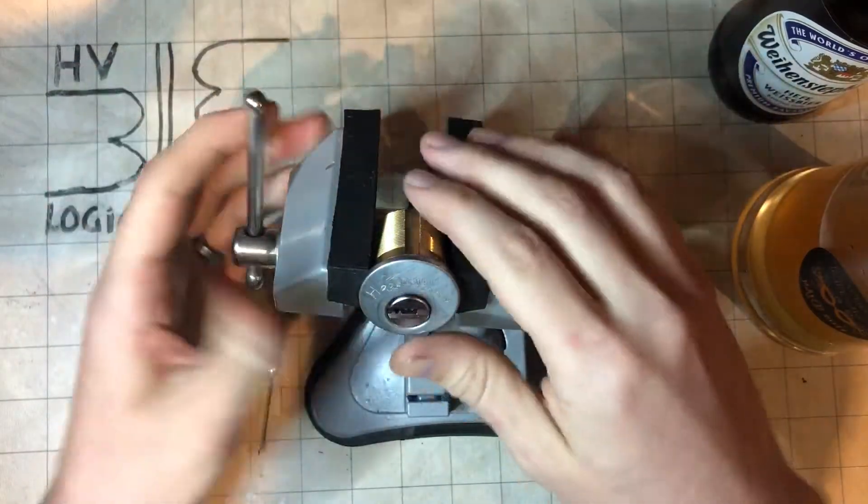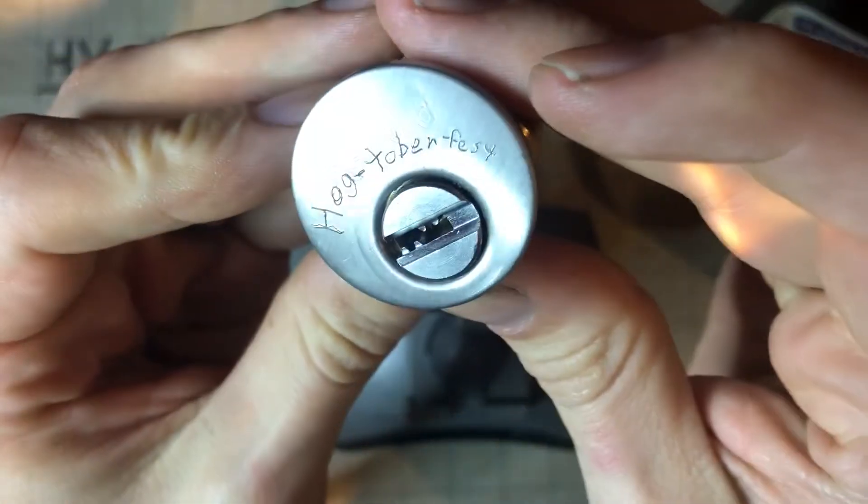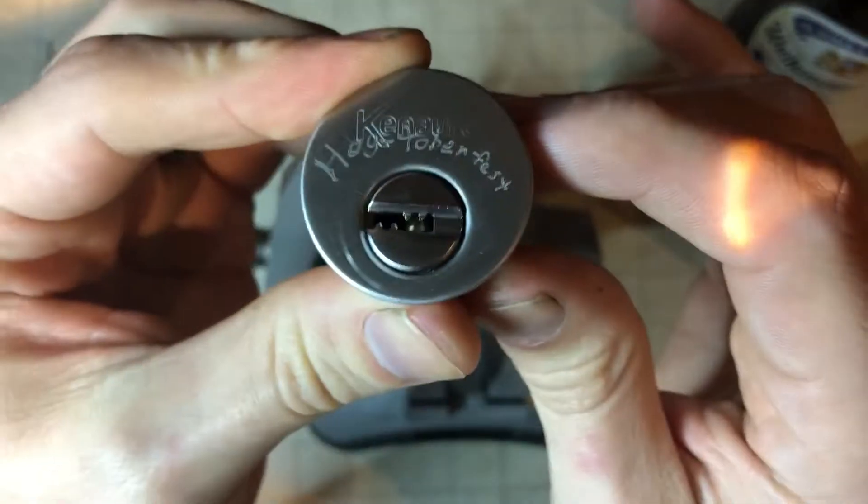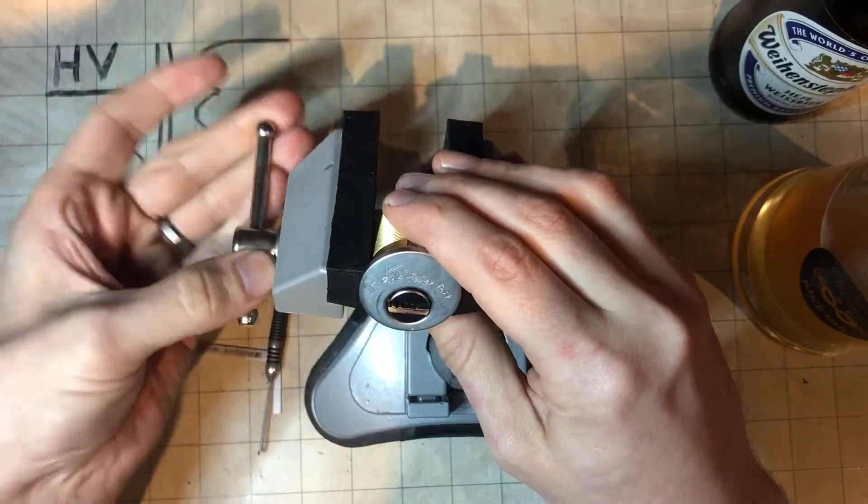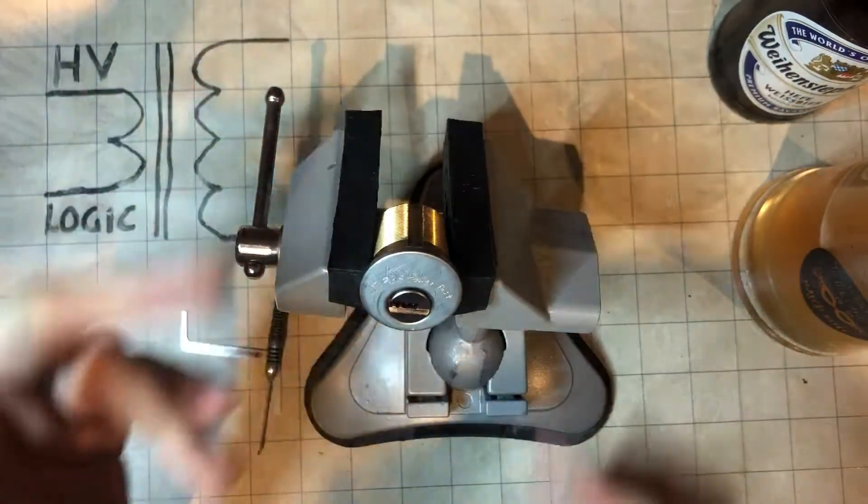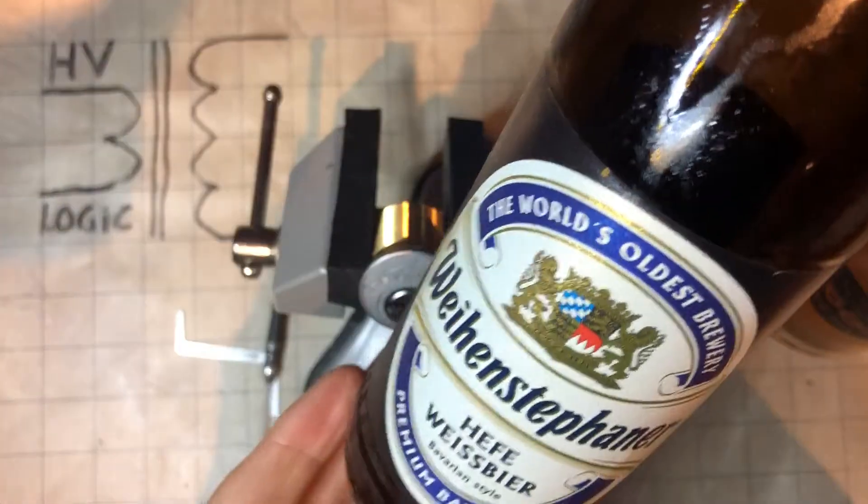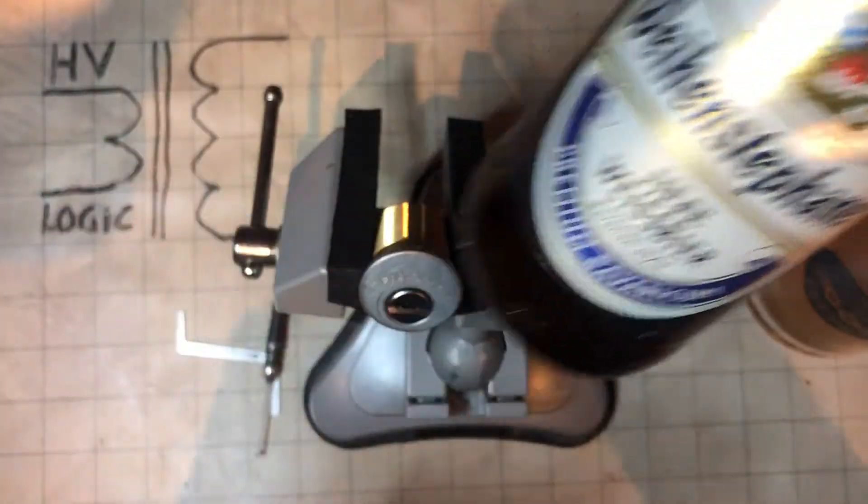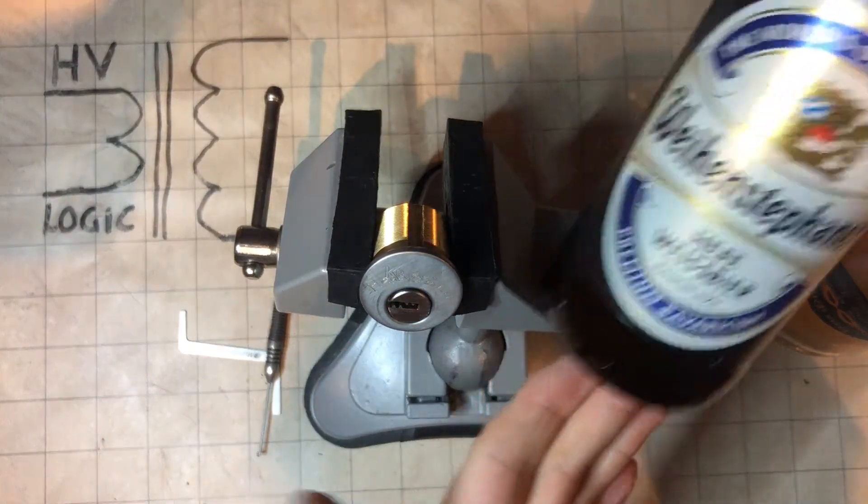I have here a new challenge lock, Hogtoberfest, which is a dimple challenge lock, very rare. Don't see many dimple challenge locks, and not just a dimple challenge lock, but a pin-in-pin, multi-lock style. And of course because it is called Hogtoberfest, I thought it would be appropriate to drink a German beer with it, so I've got my favorite brewery here.